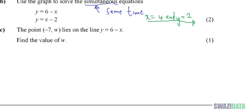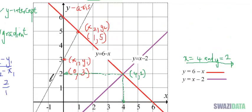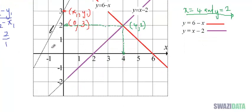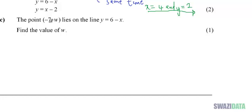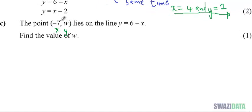Since the point lies on y equals 6 minus x and x is negative 7, we need to substitute to find the value of y. When x is given, we substitute it to find y.